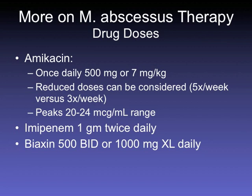More details on treating abscessus: amikacin is usually once-daily therapy at 7 mg/kg or 500 mg; doses can be reduced to improve tolerability. Imipenem is usually given as 1 gram BID. Clarithromycin either 500 mg BID or 1,000 mg XL daily. The goal is to improve tolerability of therapy at home.